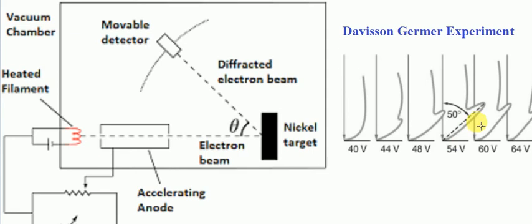This sudden increase in intensity can be explained with the help of superposition of waves only. They explained that such a peak in intensity occurs because of the constructive superposition of waves. The scattered things are electrons and they are particles, but observing this type of peak at a particular angle led them to propose that these electrons consist of some sort of waves. This is why this type of constructive superposition occurs at 50 degrees, as constructive superposition is a property of waves.